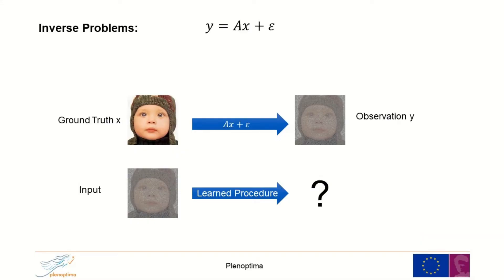The equation is Y equals AX plus Epsilon. Y is an observed image — a degraded image — of some kind of a ground truth image X. X is perceived to be a perfect, clean, good image, which is then degraded by some degradation A. That could be dropping pixels, blurring the image, or converting it into a lower resolution.